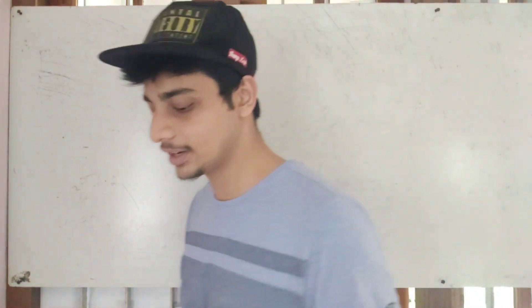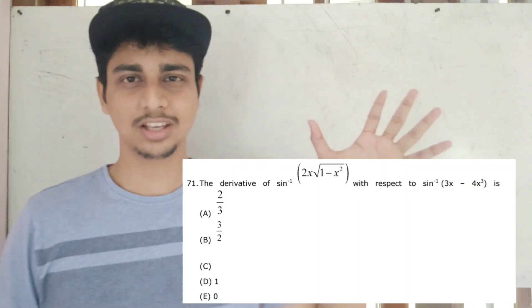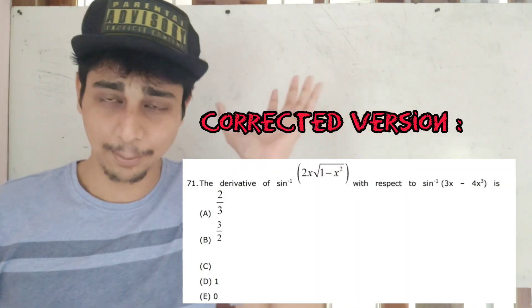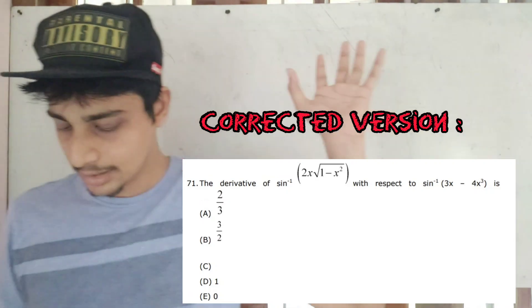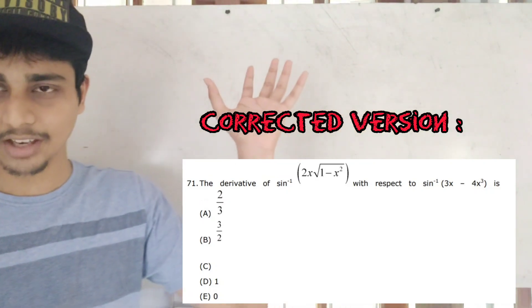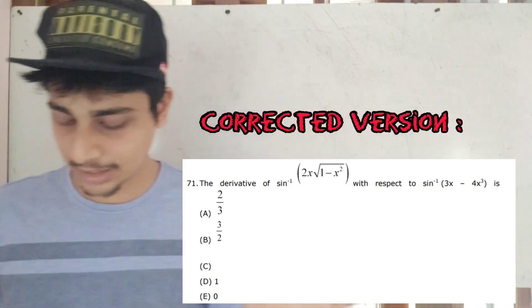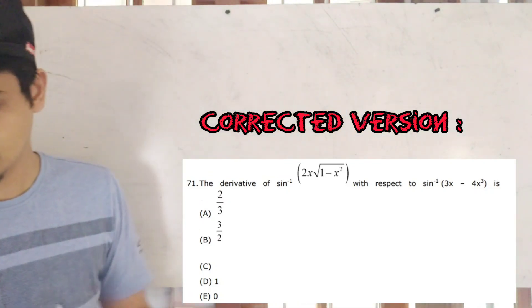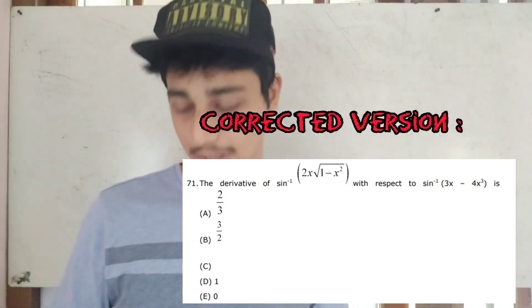I have been doing a full year. I have one question. The derivative of sin inverse 2x root 1 minus x square with respect to sin inverse 3x minus 4x cube.